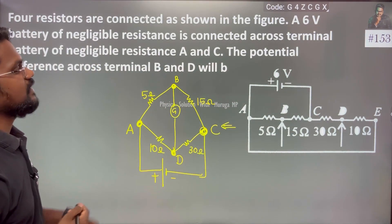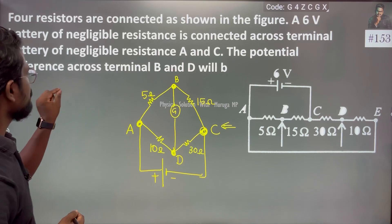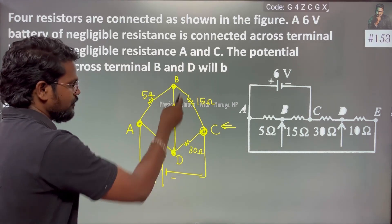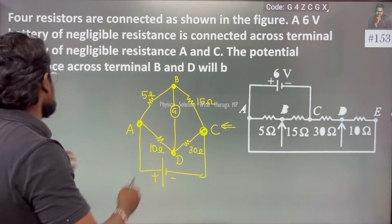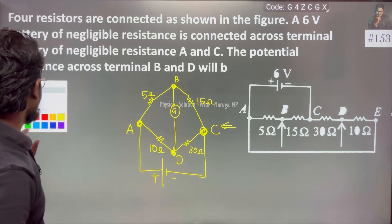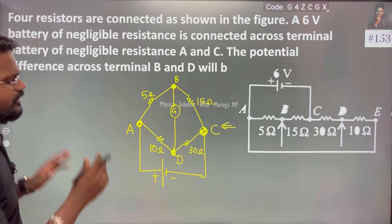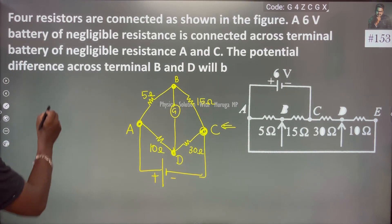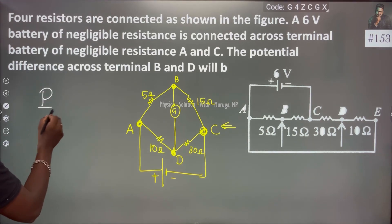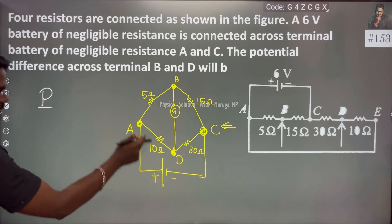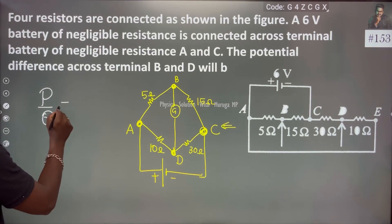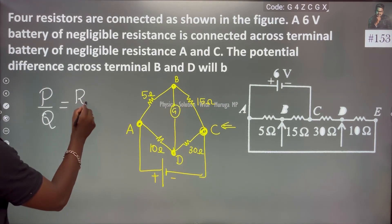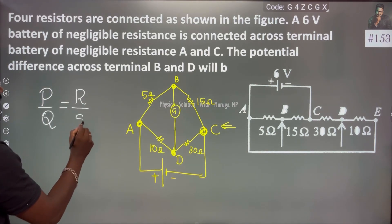What is the potential difference across terminals B and D? For the Wheatstone Bridge balanced condition, the equation is P by Q equal to R by S.